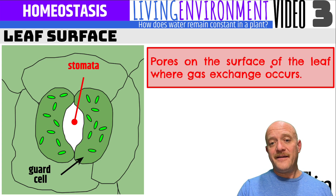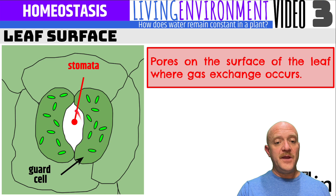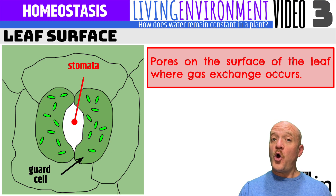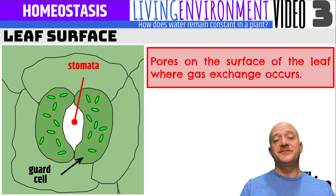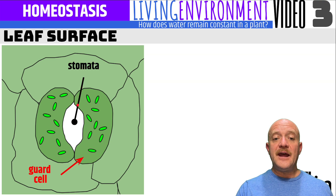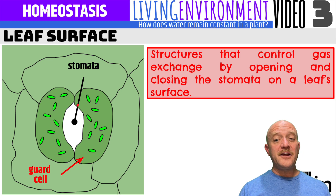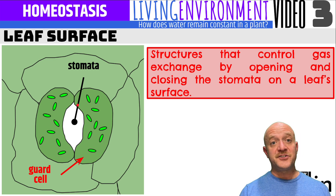The stomata are pores on the surface of a leaf where gas exchange occurs — basically a hole. When the stomata are open, when the guard cells are open, the stomata is an open hole and it will allow gas exchange to occur. The guard cells are structures that control gas exchange by opening and closing the stomata on a leaf's surface.